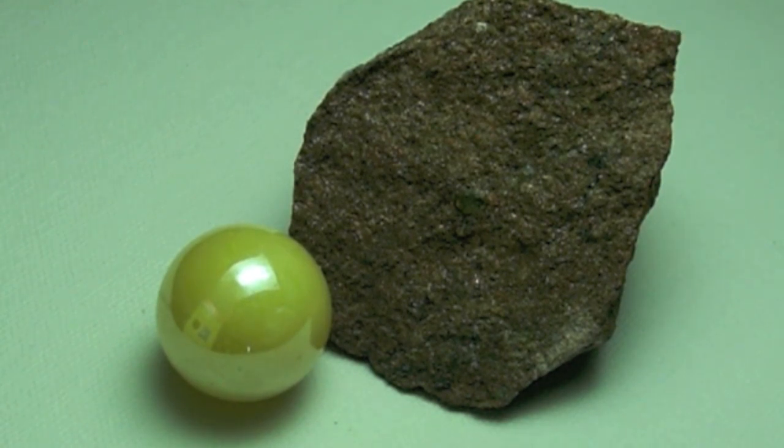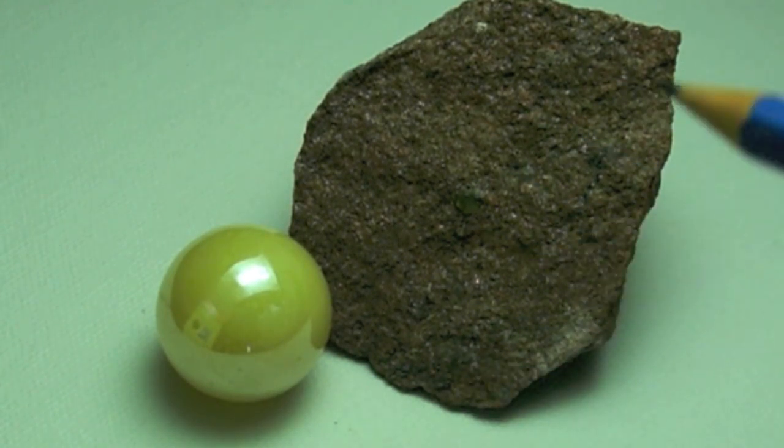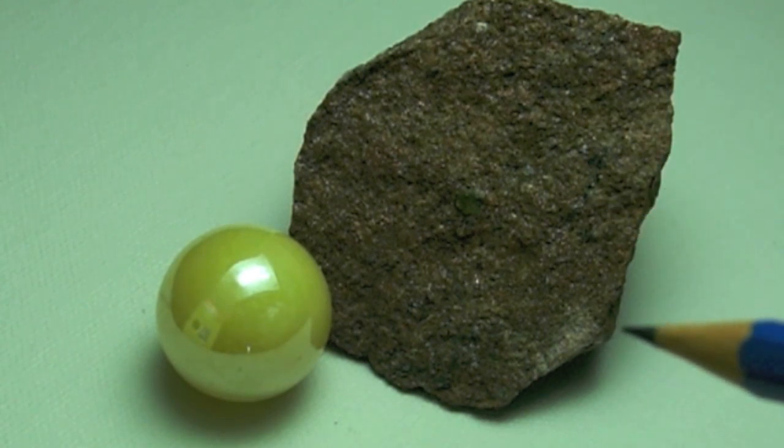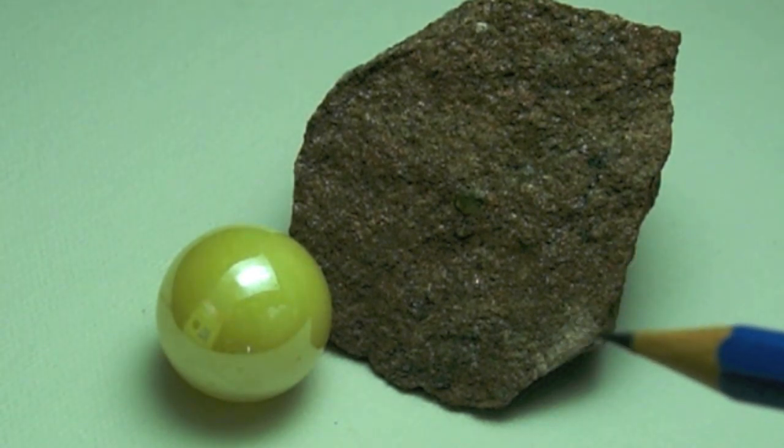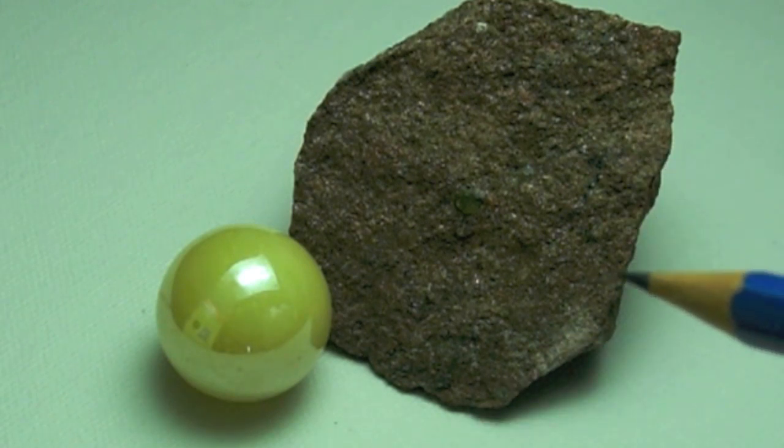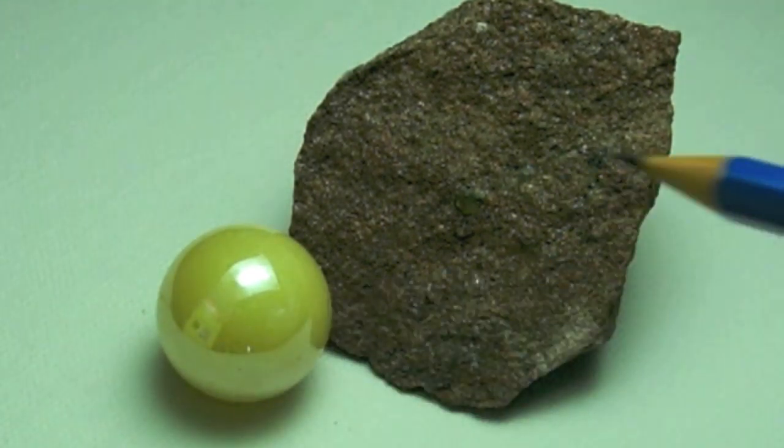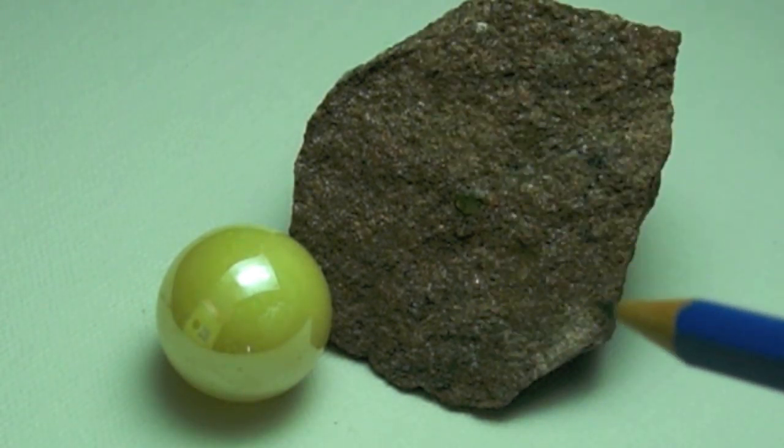So, uranium is 70% denser than lead, but not as dense as osmium, gold, platinum, iridium, or any of those metals right there. And, along with the elements having atomic weights greater than iron, uranium can only be naturally formed through a supernova explosion. So, that's kind of an interesting fact I find about this.